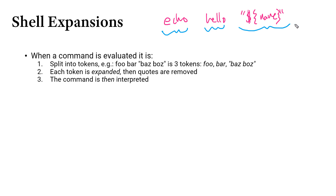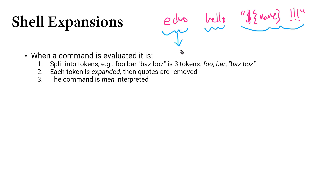A double quoted string value would be a single token, even if it had some spaces and exclamation points inside. Then step number two is each token is expanded. For an ordinary string like hello, nothing is going to happen — it stays the same. But this other string has what we call a parameter expansion, or variable expansion, in it.